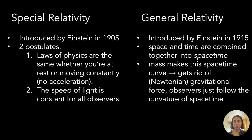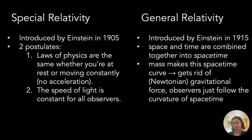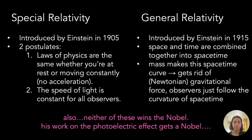Neither special nor general relativity actually wins Einstein the Nobel Prize. Einstein wins the Nobel for his work on the photoelectric effect — you can check out the 20th century physics chapter in your book for more. His theories on relativity don't win the Nobel.